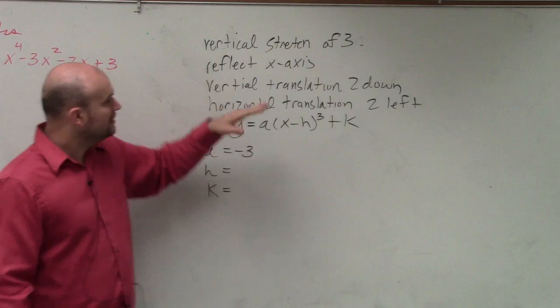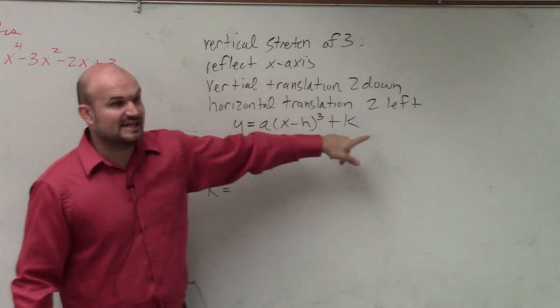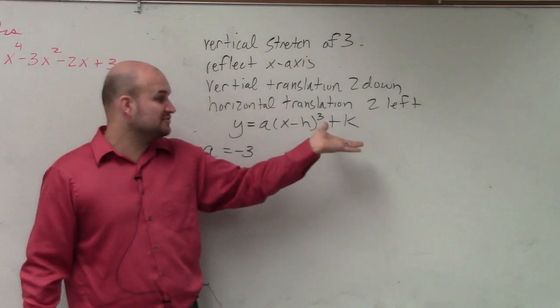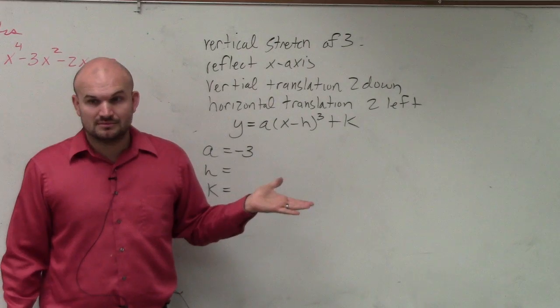Next one, vertical translation is 2 down. You either have h or k. Which one of these, remember, from quadratics, absolute value, which letter tells you to go up or down? k.